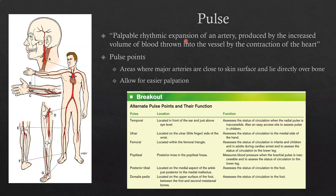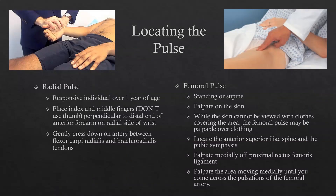Pulse is simply the expansion of an artery that you can palpate, created by the contraction of the heart pushing blood through the major arteries. Pulse points are where you can feel the pulse, and there are many in the human body. We will primarily look at the femoral and the radial pulse. The radial pulse is assessed at the wrist and is the most common pulse assessed in a conscious individual, using the index and middle fingers.